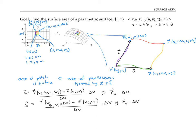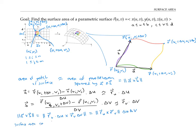The area of the parallelogram spanned by a and b is the magnitude of the cross product of a and b. That equals the magnitude of the cross product of r sub u times delta u crossed with r sub v times delta v. Pulling out the scalars delta u and delta v, I get the magnitude of (r sub u cross r sub v) times delta u delta v. That's my best approximation for the area of a patch. To get the entire surface area, I add up all patch areas from i equals 1 to n, j equals 1 to m: the sum of |r sub u cross r sub v| delta u delta v.